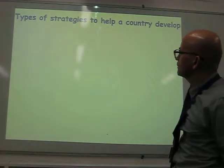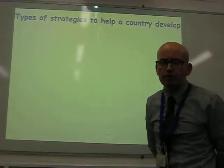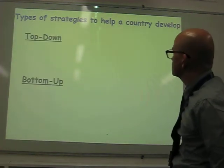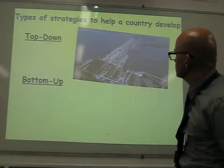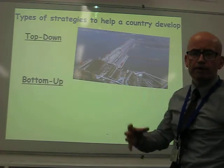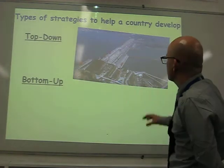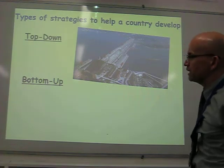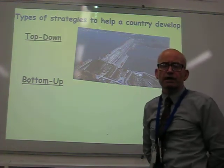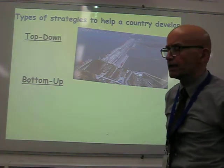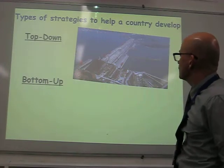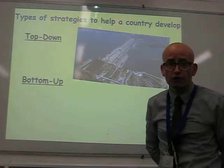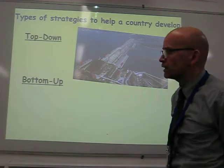Types of strategies that countries can use to help move through the development stages. You can have top-down strategies that come from the government and feed down to the people, like the enormous Three Gorges Dam project in China, designed to create hydroelectric energy and fuel the industrial revolution that has occurred and is occurring in countries like China.